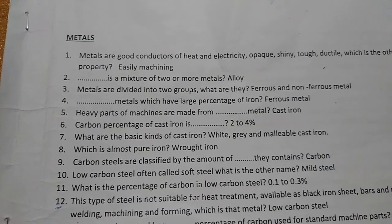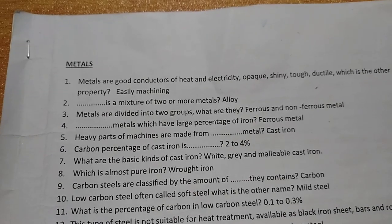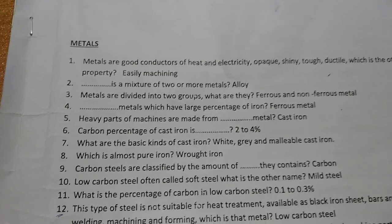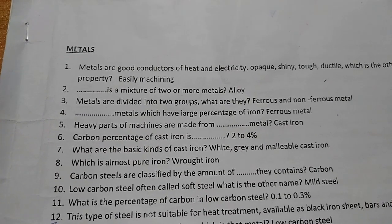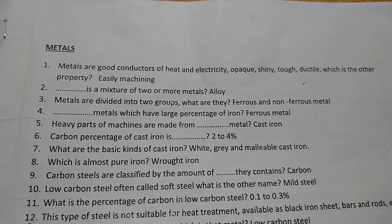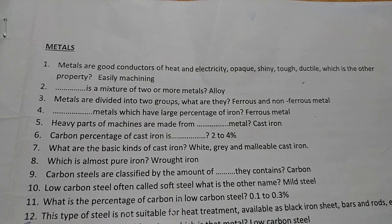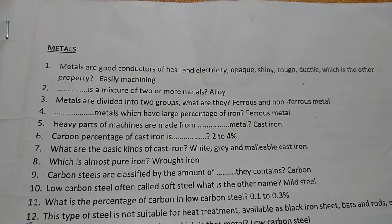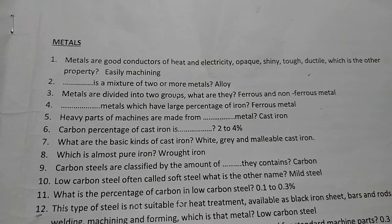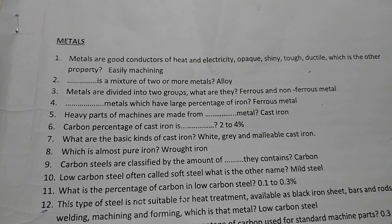Welcome to Max Block. Today we discuss metals. First question: metals are good conductors of heat and electricity, opaque, shiny, tough, ductile, and easily machined. Second question: an alloy is a mixture of two or more metals.